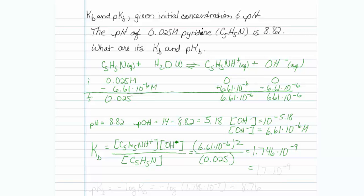My pKB would be equal to the negative log of my kB, which is the negative log of 1.746 times 10 to the minus 9, which is equal to 8.76.